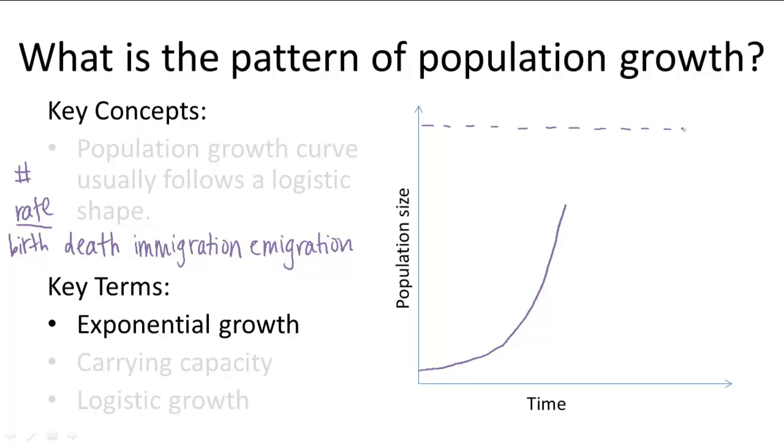And it's usually represented on a graph like this, as a dotted line. And this is called the carrying capacity of the environment, and it's represented usually by a K.